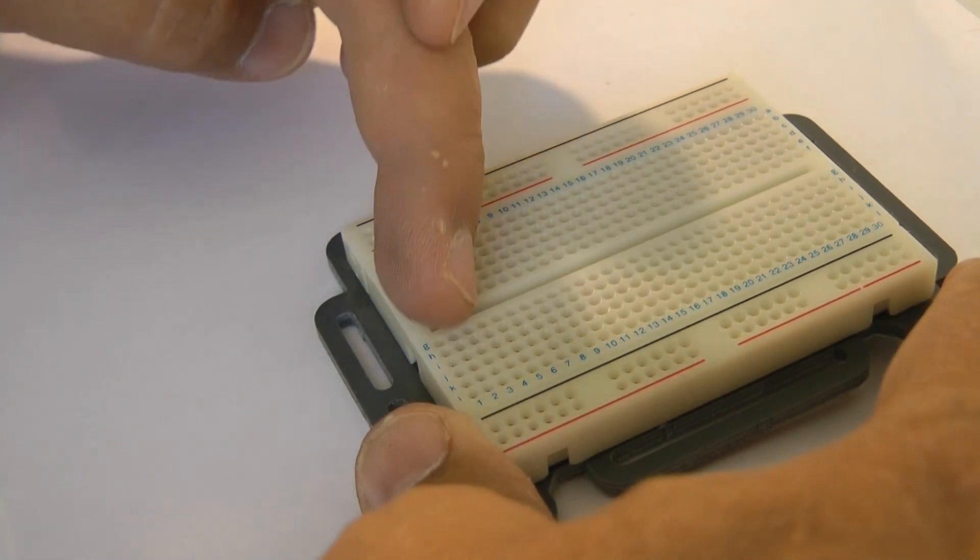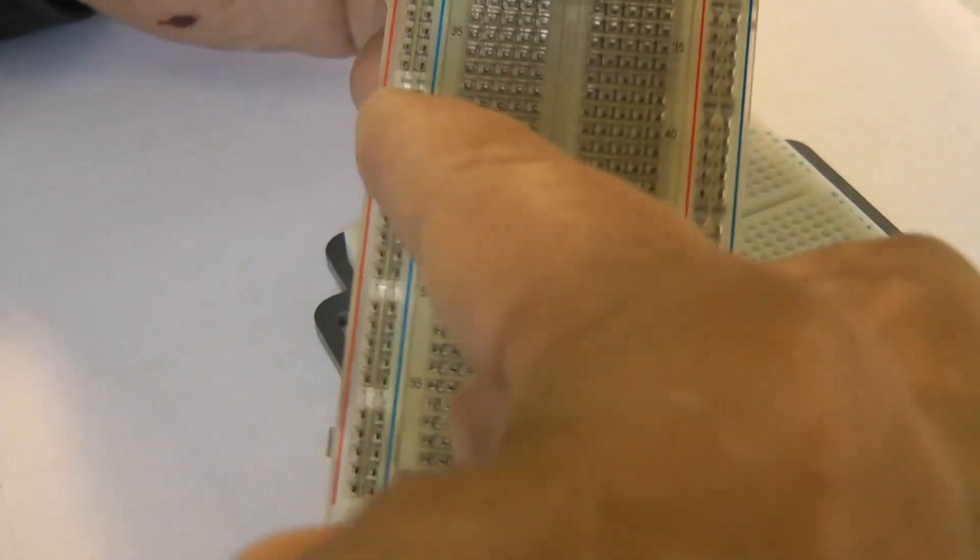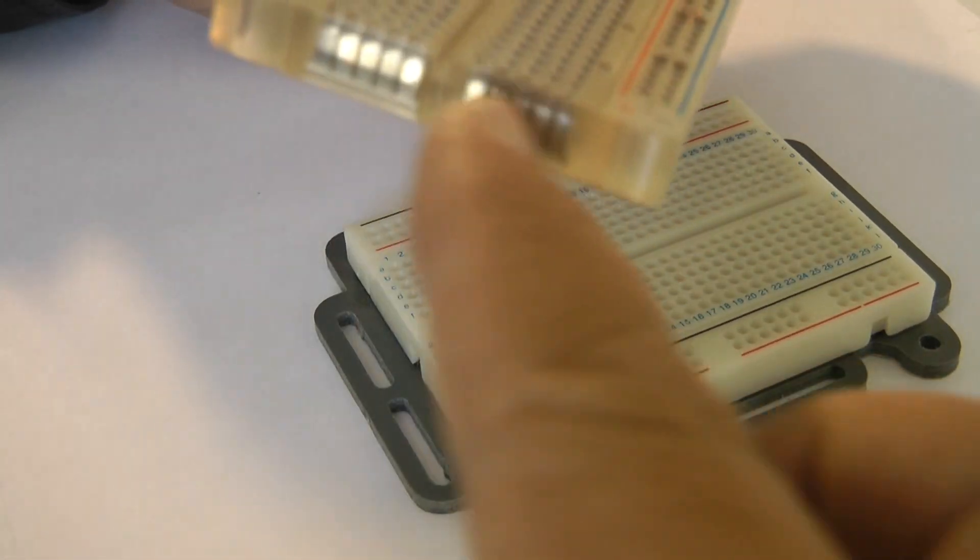These are rows and these are columns. If you look at this clear breadboard you'll see that these things run across wires.